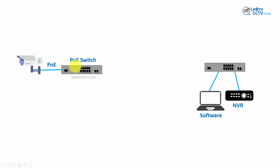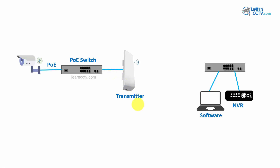You need to send the videos to the other side. Instead of using cables, you can use the air — and how do you do that? By using radios. You have a radio connected to your PoE switch, so the PoE can also power up the radio. That will be your transmitter, so you can transmit the videos from the camera to the other side.